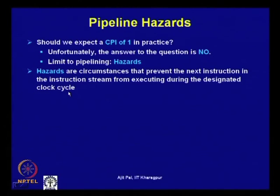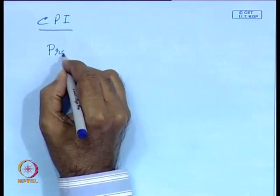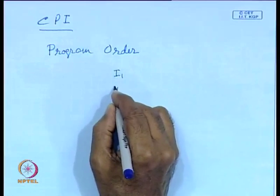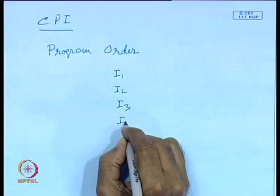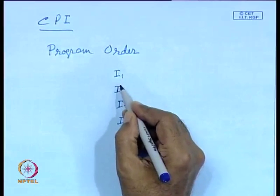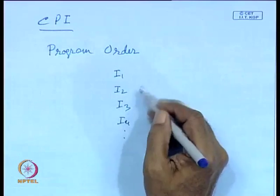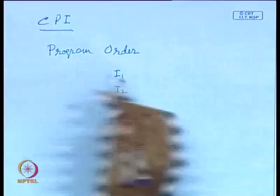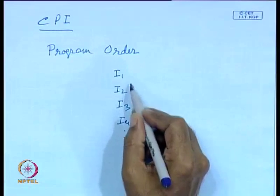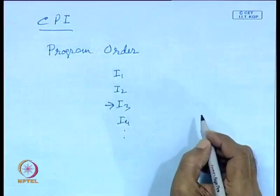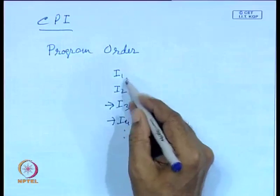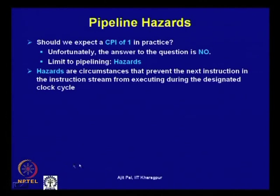We are fetching instructions in program order: instruction 1 followed by instruction 2, 3, 4, and so on. In pipelining, we overlap execution. Whenever we try to do this, we find that where instruction 3 should have been executed, we are unable to do so because of hazards, or where instruction 4 is supposed to execute, it cannot because of dependences among instructions. This is known as a hazard.